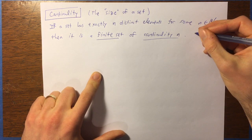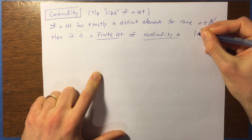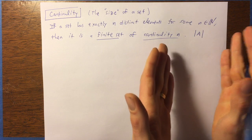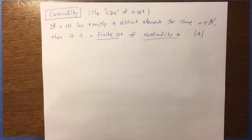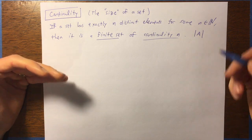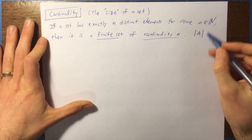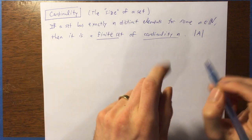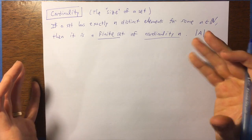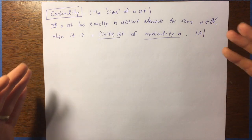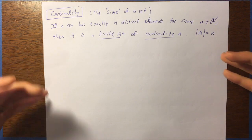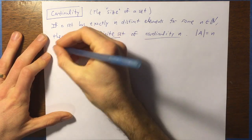The notation for this is: if the set is called A, you can write absolute value symbols around A. This absolute value idea is sometimes used to denote the idea of magnitude. If you've done anything with vectors in a physics class or multivariable calculus, you may remember that absolute value is used to talk about the length of a vector because that's its magnitude. The magnitude of a set is its size — the number of elements in it. So we use absolute value to talk about the size of a set, its cardinality.